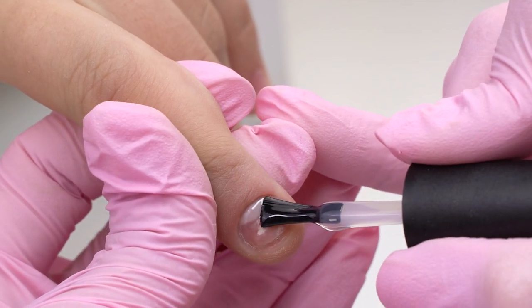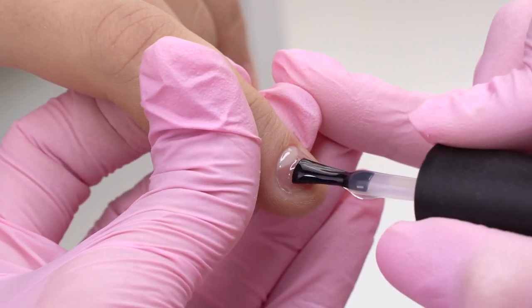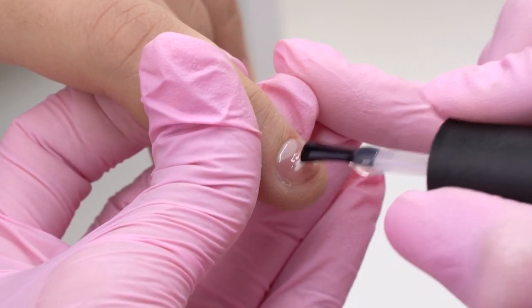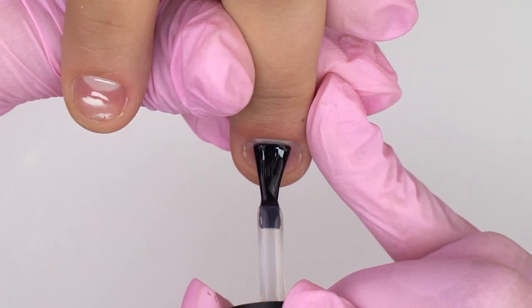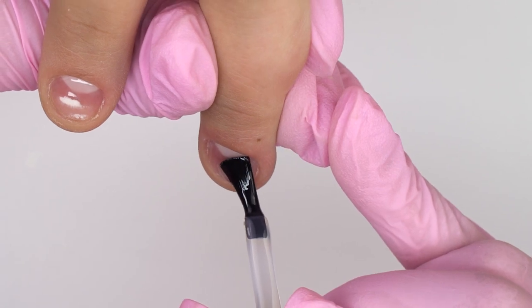I'm sure you will agree that with such a short nail plate, a regular gel coating will not look that aesthetically pleasing. The nails are too short and ridiculously round. So we will sculpt them today.